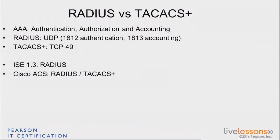TACACS uses a different port from RADIUS, and this is something you need to remember. RADIUS uses UDP, and for authentication, RADIUS uses port 1812 by default, and for accounting, 1813. TACACS uses TCP and uses port 49.